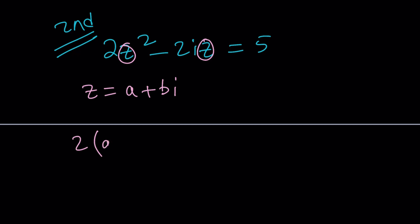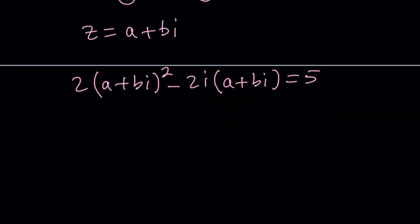We get 2 times a plus bi squared minus 2i multiplied by a plus bi equals 5. You can divide both sides by 2 if you want, but that's no big deal. Let's keep it free of fractions for now. Let's go ahead and expand what's inside the parentheses. So how do you square a plus bi? You square a, and then you square bi, which is minus b squared, because i squared is equal to negative 1. And then plus 2abi from the 2ab. And then if you distribute the negative 2i, you get negative 2ai minus 2bi squared, but that turns into 2b. And that is equal to 5.